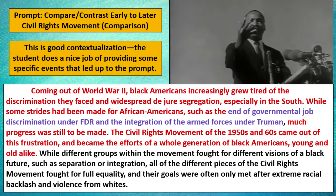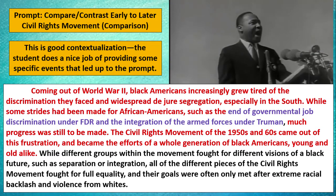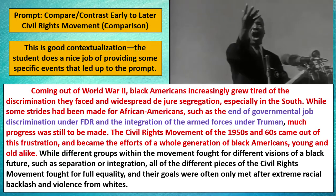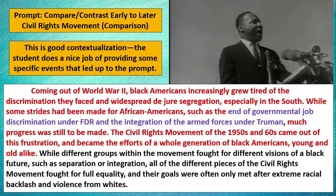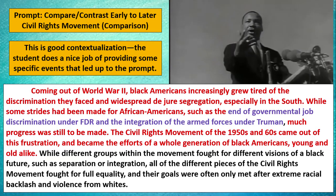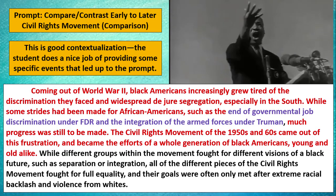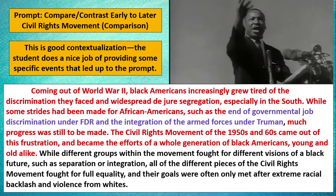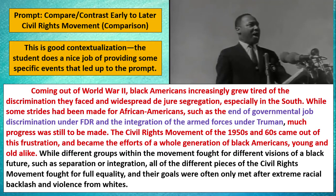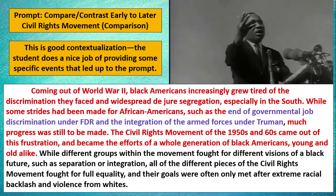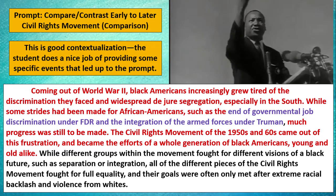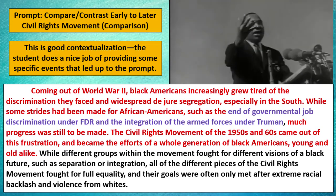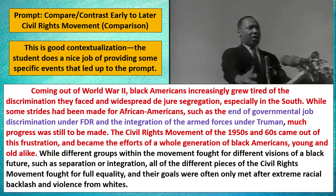Always begin with your contextualization. This person did a good job of contextualization. The first three to four sentences approximately give some background to the civil rights movement, and the student does a nice job providing some specific events that led up to the prompt. This is not just a mere reference or a phrase — they're very, very specific. You can see some key terms, highlighted in red and purple, such as the ending of governmental job discrimination under FDR and the integration of the armed forces under Truman, showing how the civil rights movement got kick-started.